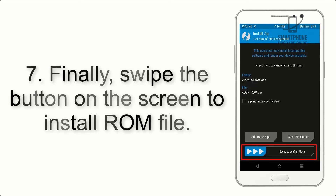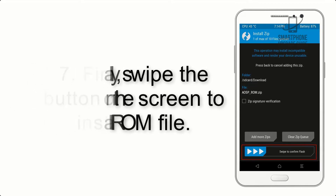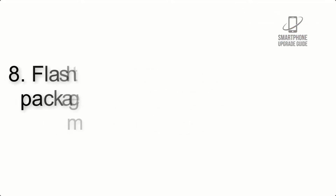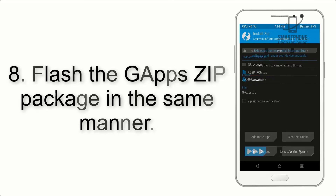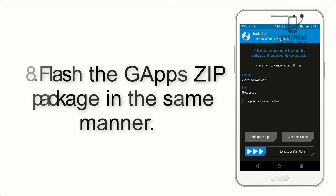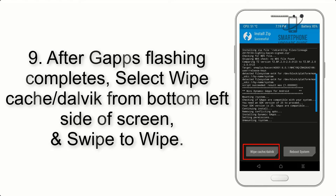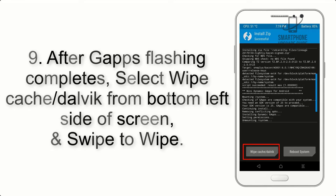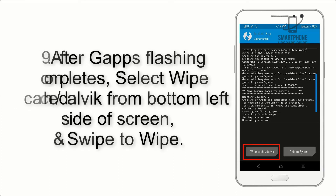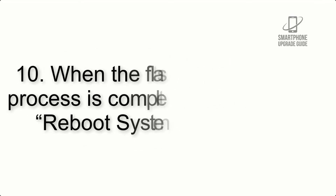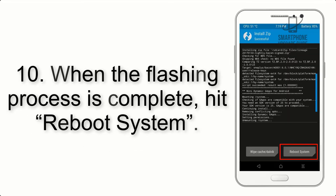Step 7: Swipe the button on the screen to install the ROM file. Step 8: Flash the GApps zip package in the same manner. Step 9: After GApps flashing completes, select Wipe Cache and Dalvik from the bottom left side of the screen and swipe to wipe.